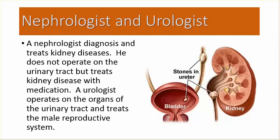Nephrologist: a nephrologist diagnoses and treats kidney diseases. He does not operate on the urinary tract, but treats kidney disease with medication. A urologist operates on the organs of the urinary tract and treats the male reproductive system.